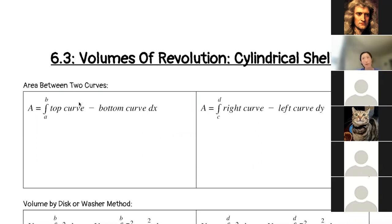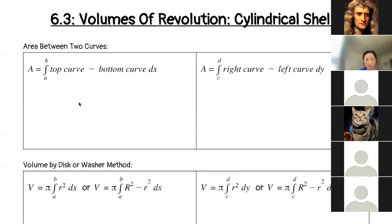Before we do that, let's talk through a quick review of some of the topics we've covered in this chapter. So we started off talking about area between two curves. Area is from A to B of the top curve minus the bottom curve, dx. Or if it was a sideways-looking situation, then we had the integral from C to D of the right curve minus the left curve, dy.